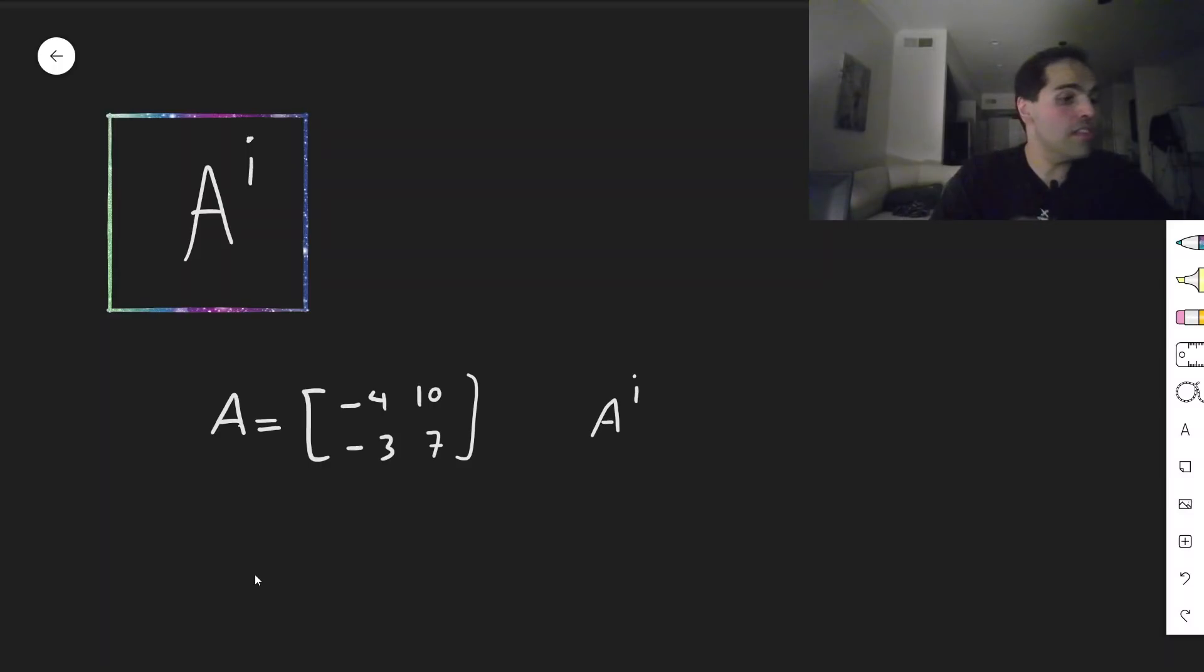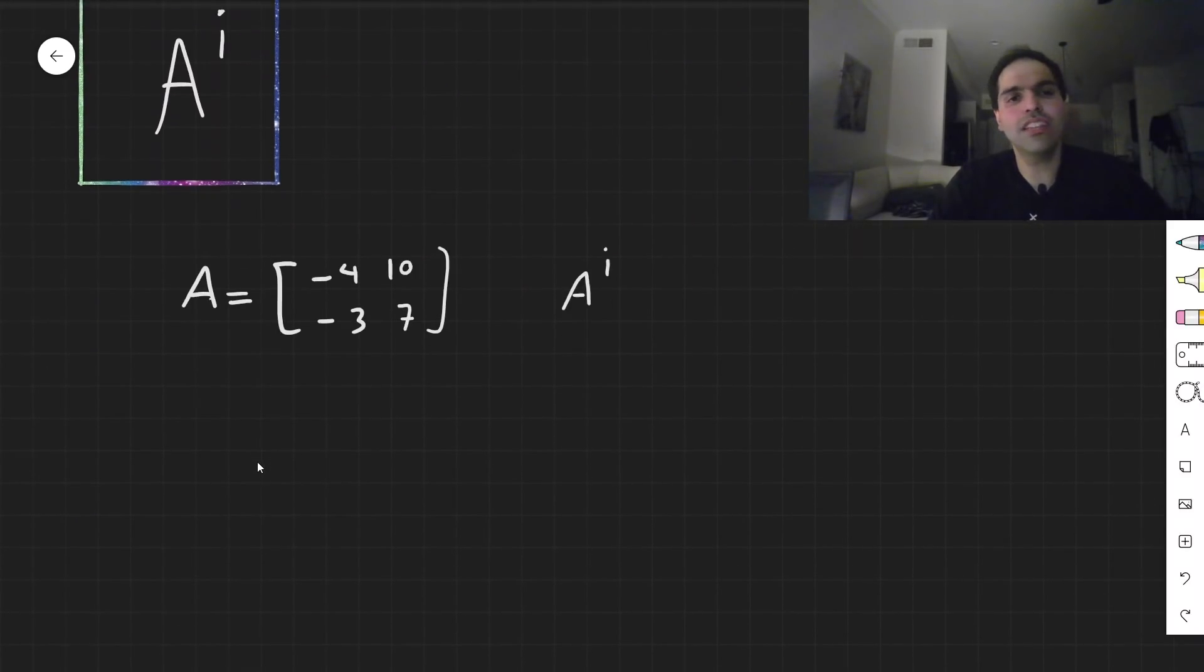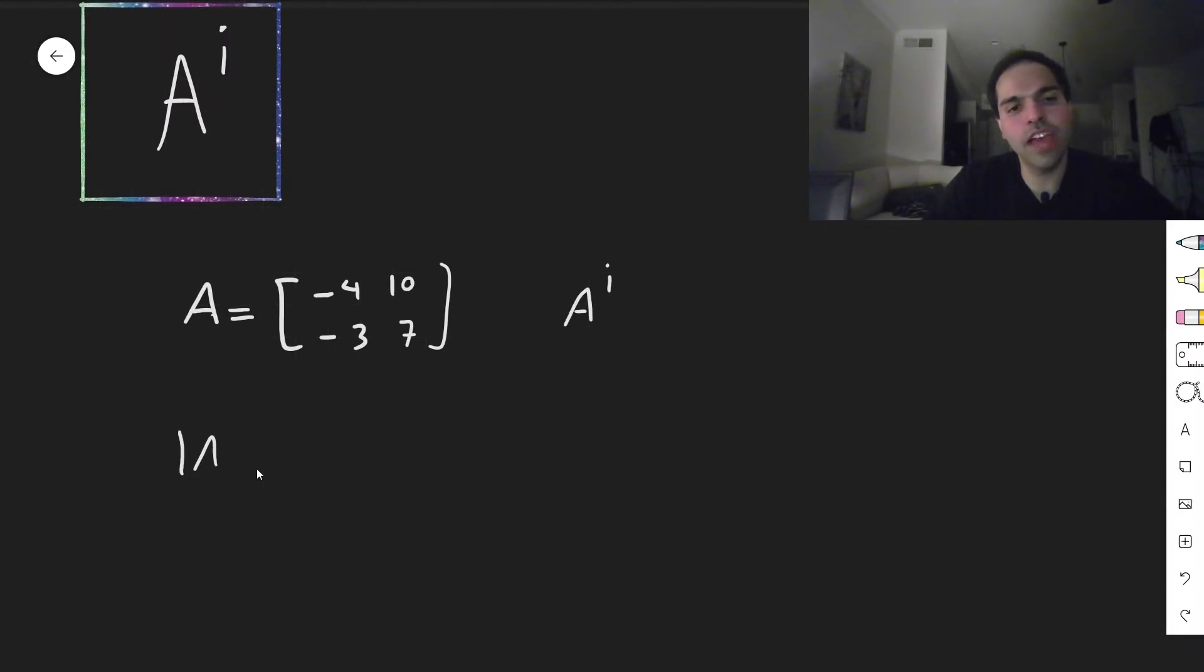And just as is usual with matrices, let's just calculate the eigenvalues and eigenvectors. So first, let's do the eigenvalues. Let's do A minus lambda I, the determinant. That's the determinant of minus 4 minus lambda, 10, minus 3, 7 minus lambda.